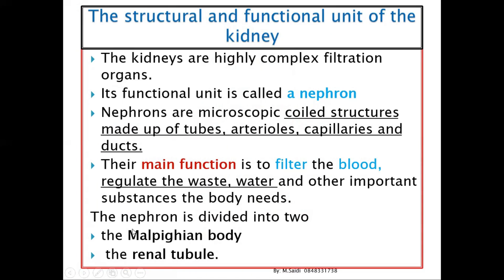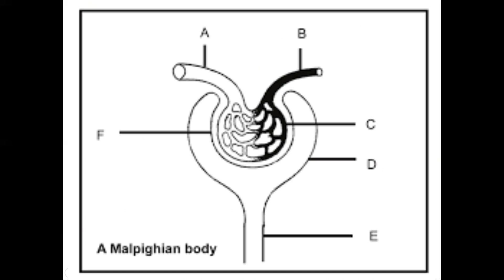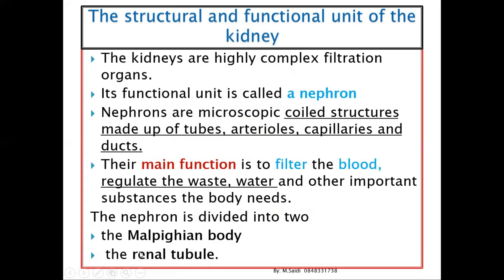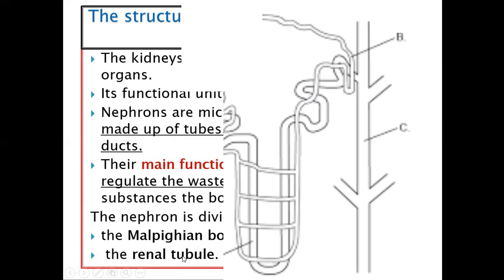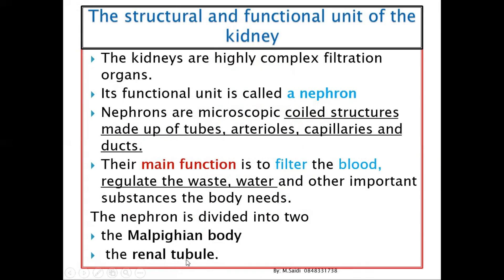The nephron is divided into two parts: the Malpighian body and the renal tubule. The Malpighian body is the upper part of the nephron, while the renal tubules are the lower part of the nephron.